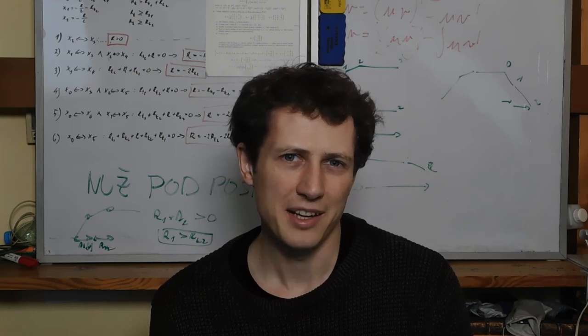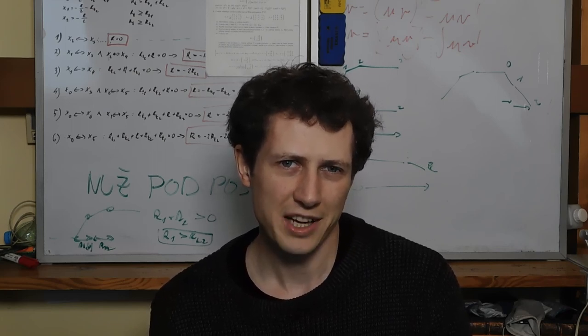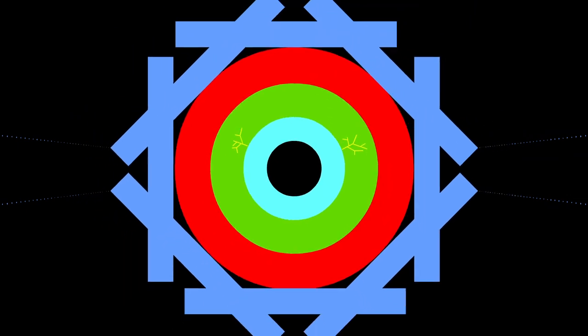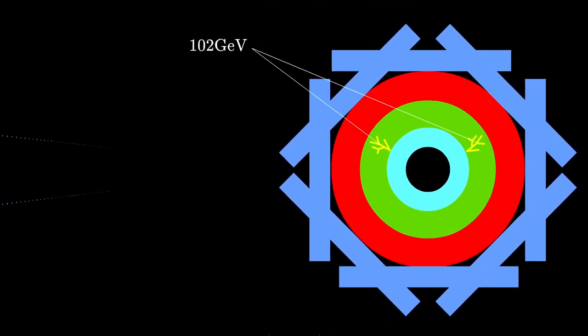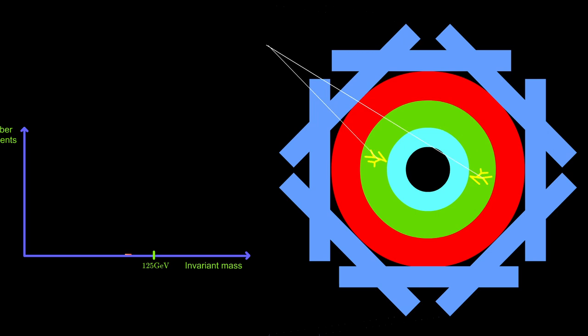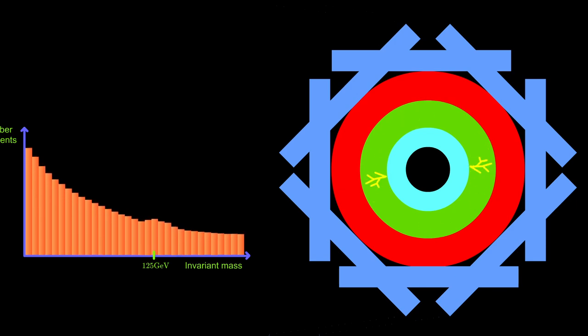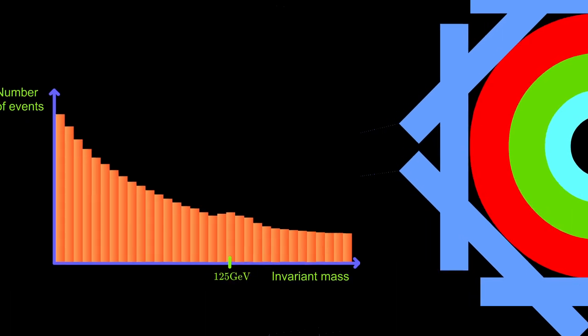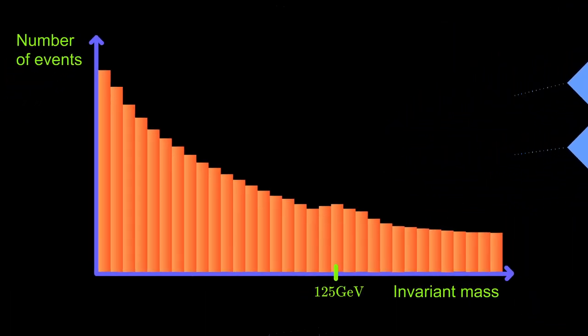So we can't ever know whether these two final state particles came from Higgs or some other particles. But there is this anomaly in the probability of creation. So we can use statistics now. Instead of just analyzing a single event of Higgs decaying to two gammas, we can analyze many. We calculate the invariant mass of each and form a graph of number of events versus the invariant mass of the photon pairs. And since there is a higher probability of creation at 125 GeV, it will eventually appear in the statistics as a peak in the number of events with the invariant mass of 125 GeV.